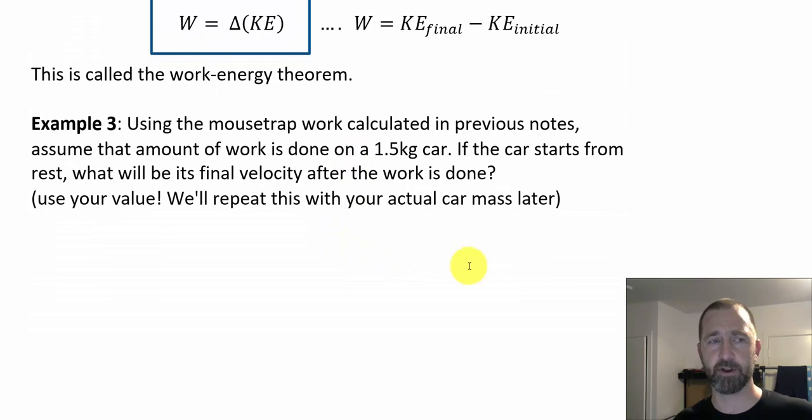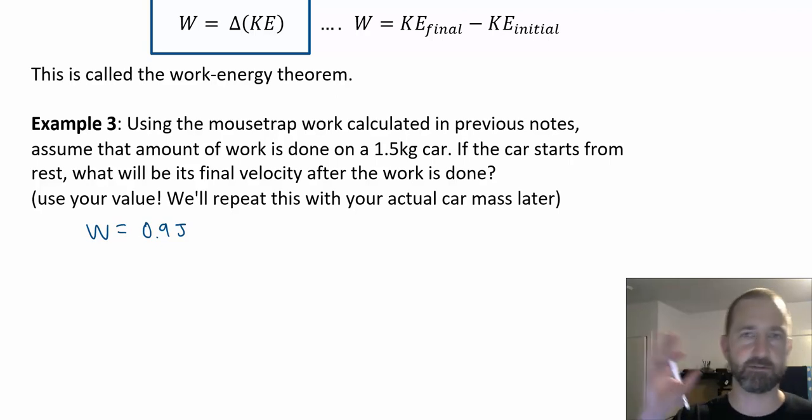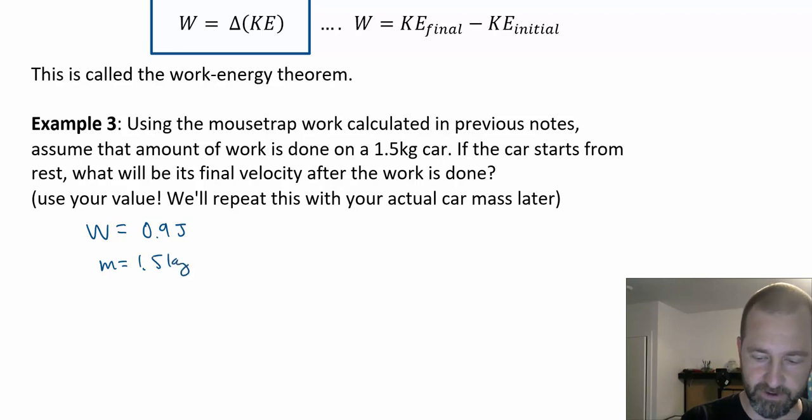Let's try it out on a problem. It says using the mousetrap work calculated in previous notes, assume that amount of work is done on a 1.5 kilogram car like we had above. If the car starts from rest, what will be its velocity after the work is done? I'm asking students to use their own values from their own labs. I'm going to use a value from previous calculations, which was 0.9 joules. So I would have work done on the car from the mousetrap of 0.9 joules. All mousetraps are going to do different things, there's going to be friction involved, energy is not going to be perfectly transferred, but we're going to assume a perfect world. I would also have the mass equals 1.5 kilograms, original velocity equals 0, and final velocity is what we're looking for.